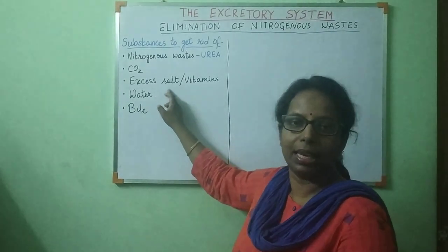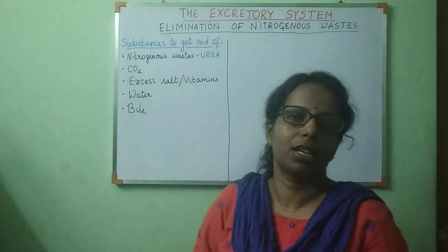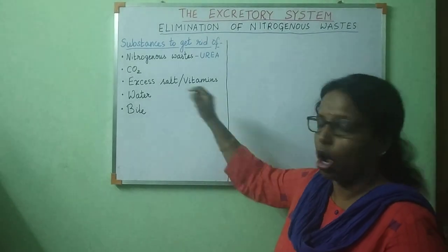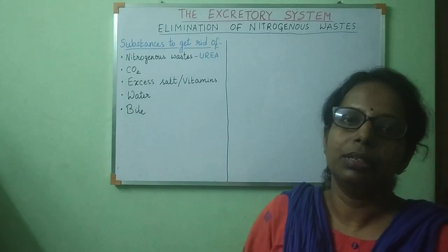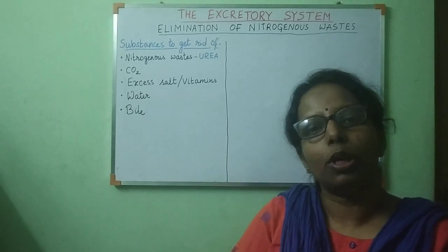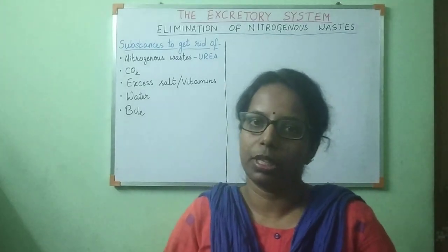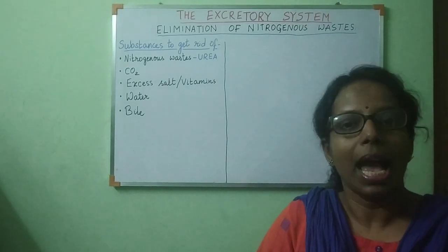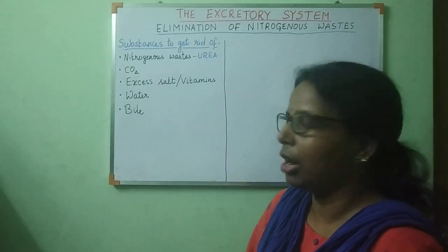Excess salt, NaCl, is given out through sweat. We have all tasted our sweat — it tastes a little salty because of the salt present. Water-soluble vitamins, especially vitamin B and vitamin C, are also given out from our body as waste. Even if we consume a lot of vitamin C through juices, our body cannot store it because it is water-soluble, so excess water-soluble vitamins are excreted.